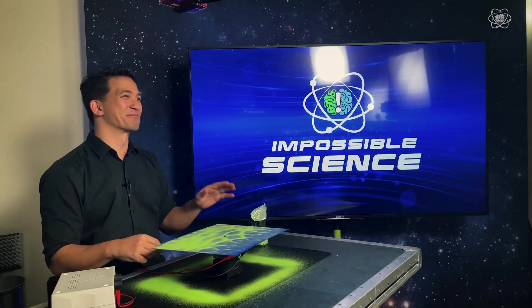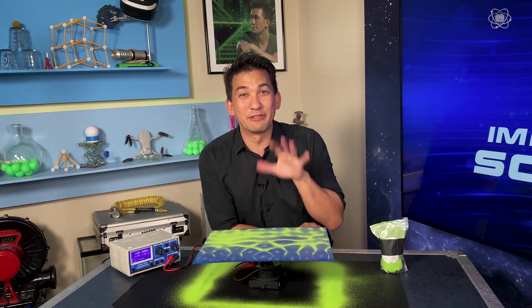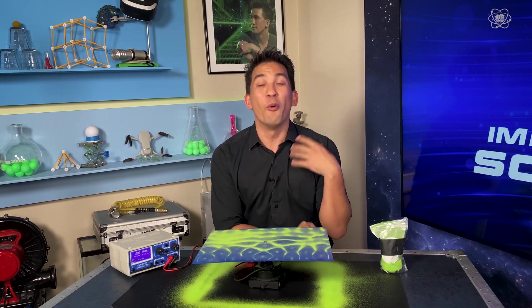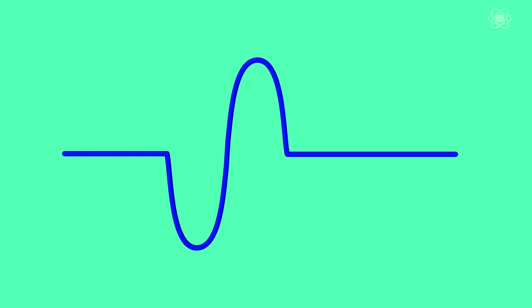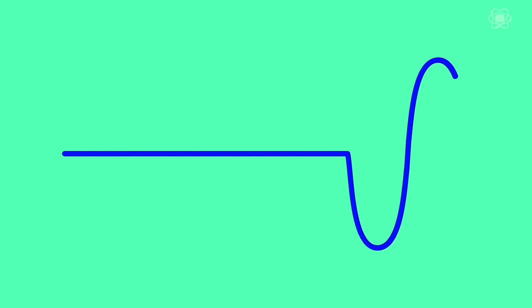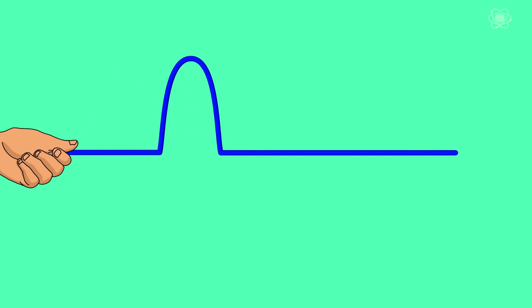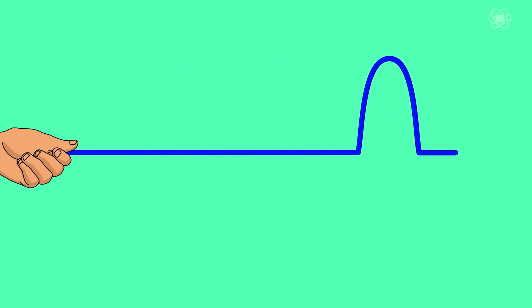Pretty awesome, right? Well, before I can get into explaining why this is actually making those patterns, first we have to figure out what a wave is. A wave represents a disturbance traveling through a medium or space. In this case, the string is our medium. If we oscillate this string up and down, we can see the disturbance as it travels down the string.